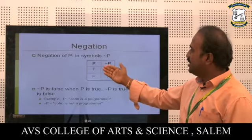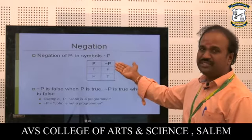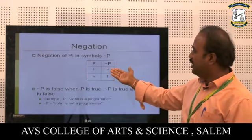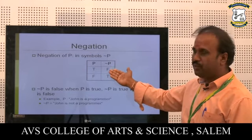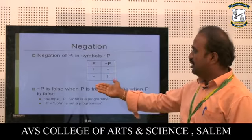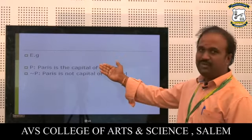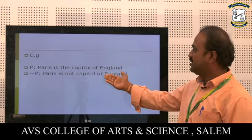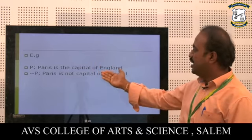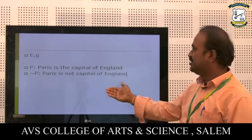Negation statement: The negation of P is denoted as not-P. In the truth table, if the statement P is true, the result of not-P is false, and if P is false, the result is true. Example: 'Paris is the capital of England' and its negation 'Paris is not the capital of England.'